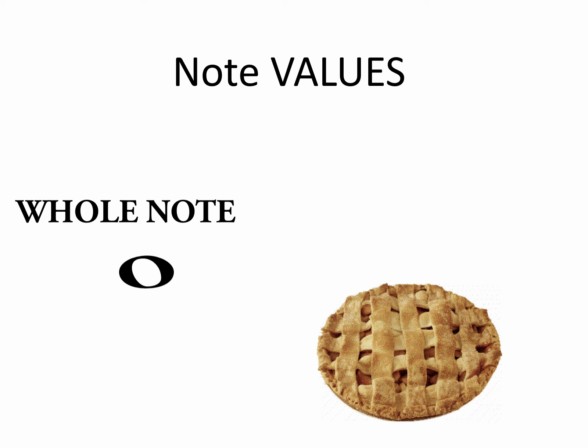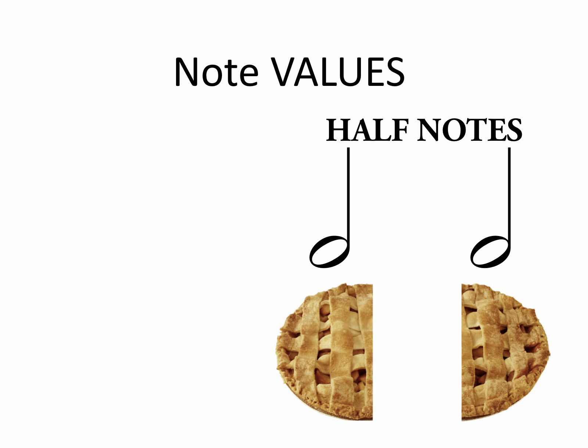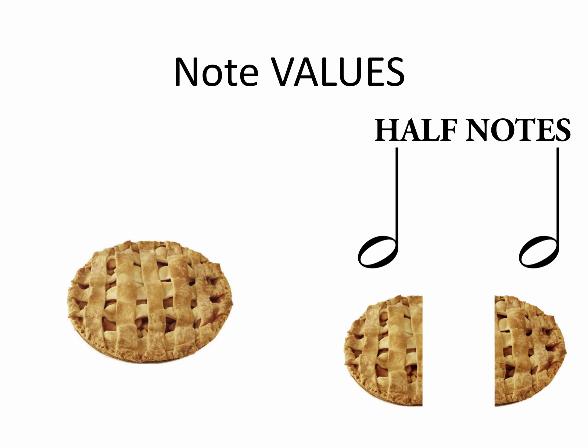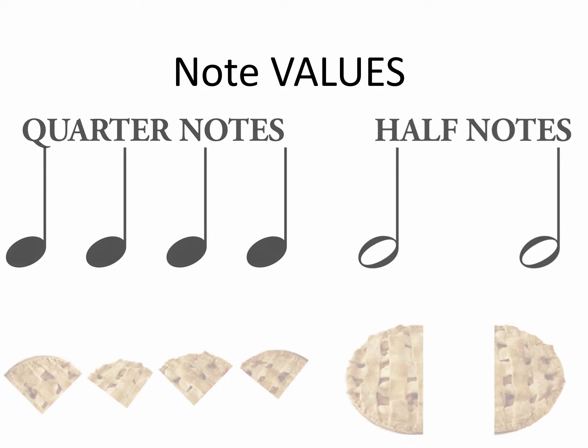Similar to the way that we can divide a pie into pieces, we can divide the duration of the whole note to name shorter notes. A note played half as long as a whole note is called a half note. We can divide the whole into quarters and get quarter notes, and continue this pattern to get eighth notes, sixteenth notes, and so forth.